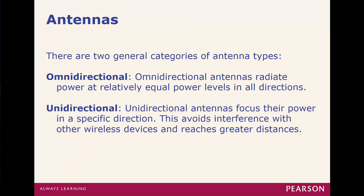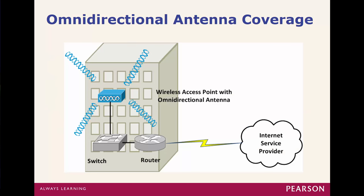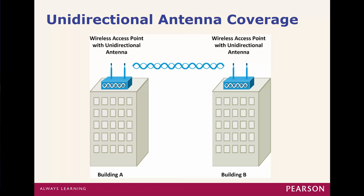Normally antennas come in two flavors: omnidirectional and unidirectional. Omnidirectional antennas radiate power at relatively equal power levels in all directions — think giant circle. That's what most networks use. Unidirectional focuses power in a specific location, more of a point-to-point connection, like satellite for example.